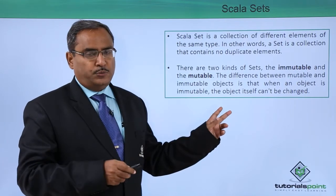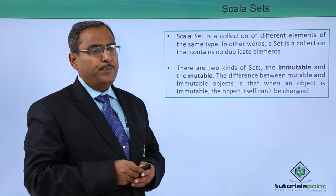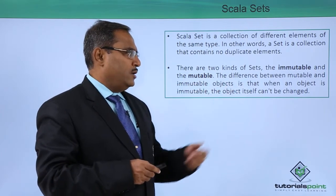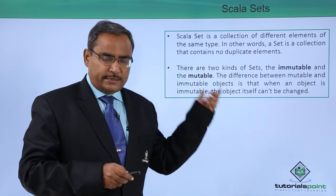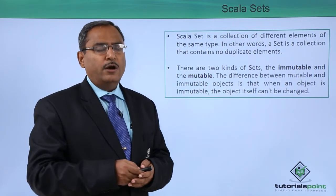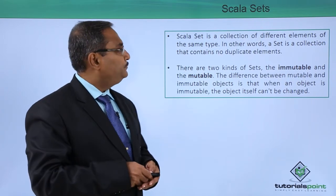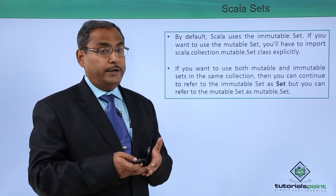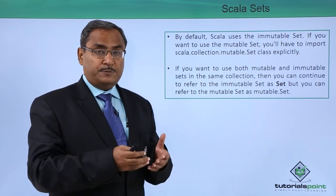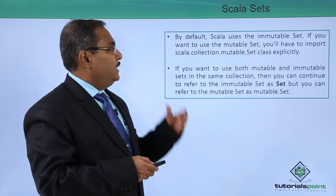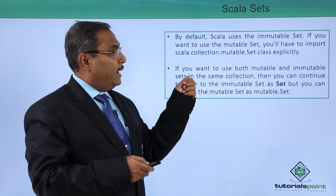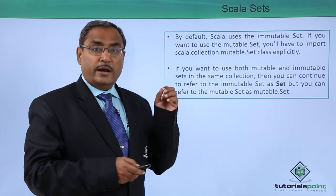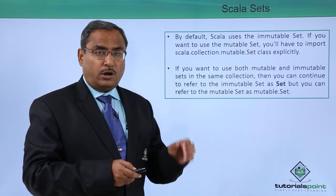There are two kinds of sets possible: one is an immutable set, and another one is a mutable set. The difference is that when an object is immutable, the object itself cannot be changed — that is the basic property of an immutable object. By default, Scala uses the immutable set, meaning the respective values cannot be changed. If you want to use the mutable set, then you have to import it explicitly — that is the scala.collection.mutable.Set class.